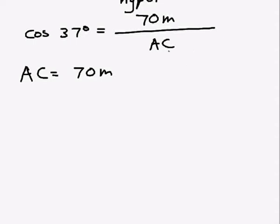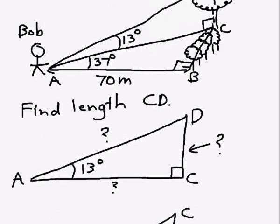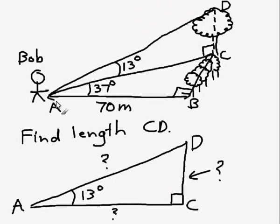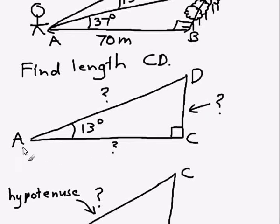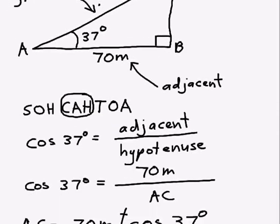So AC is going to equal 70 meters divided by cos 37 degrees. Now, we could work out what AC is numerically, or we can just leave it as that expression. So now we know AC in this diagram, we need to find out AD. So there's a tick, we know what AC is equal to. We have an expression to work it out. So we need to find out length AD now.